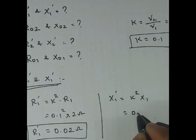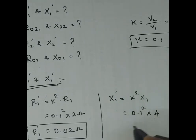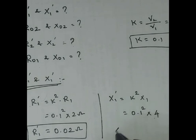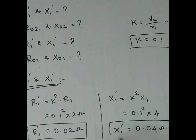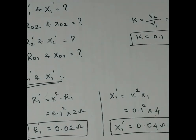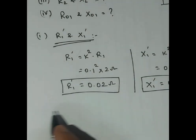Similarly, X1' = K² × X1 = 0.1² × 4 = 0.04 ohm. So X1' has been found.